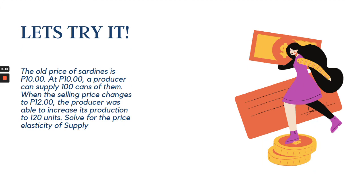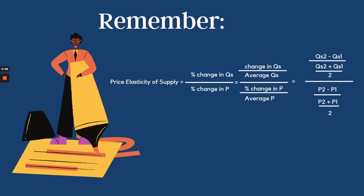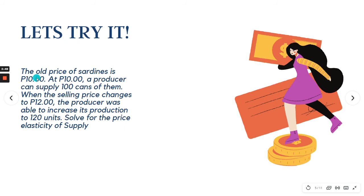For example, the old price of sardines is 10 pesos, and at 10 pesos a producer can supply 100 cans. When the selling price changes to 12 pesos, the producer was able to increase production to 120 units. Solve for the price elasticity of supply. We have: P1 = 10, P2 = 12, quantity supplied one = 100, and quantity supplied two = 120 units.